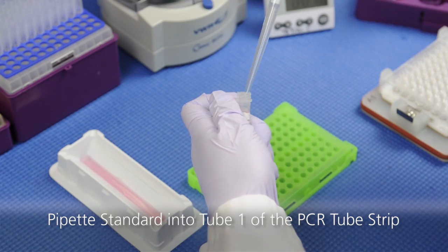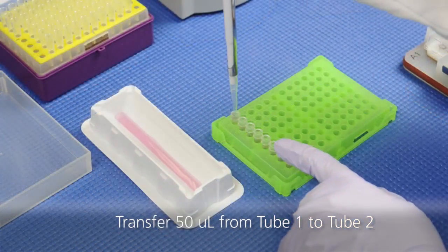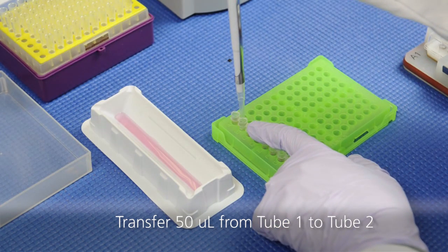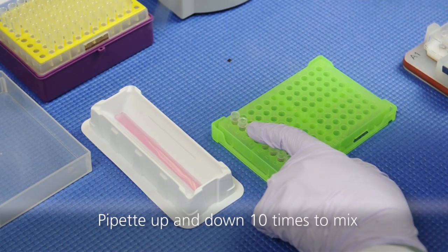Pipet the contents of the antigen standard into tube 1 of the PCR tube strip. Transfer 50 microliters from tube 1 to tube 2 and mix by pipetting up and down 10 times.